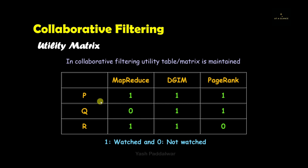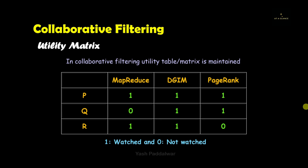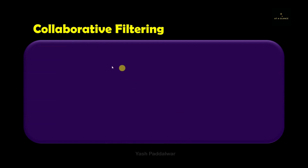User R and user P have both watched two of the same videos — MapReduce and DGM. So we can clearly recommend the PageRank video to user R, because it was watched by user P. Once user R watches the PageRank algorithm video, the zero in that particular cell will change to one. Similarly, user Q will also get a recommendation for the MapReduce video, because it was watched by the similar user P. I hope the concept of the utility matrix is clear. This utility matrix is used in collaborative filtering.